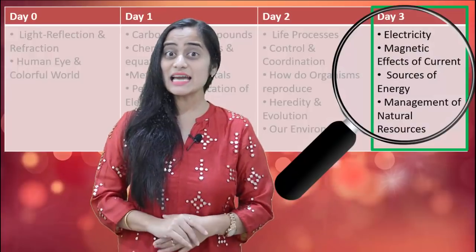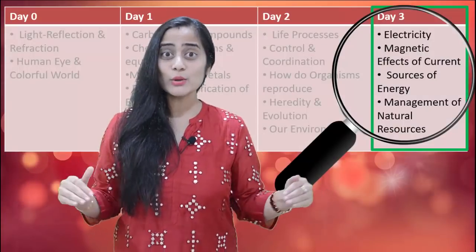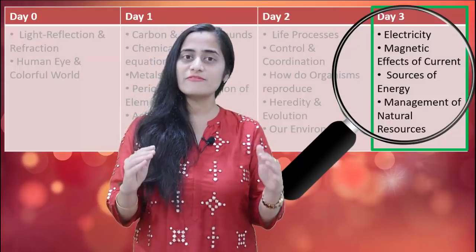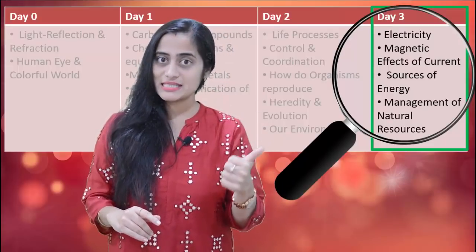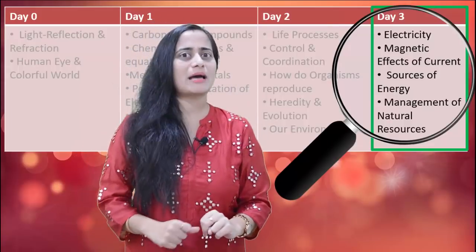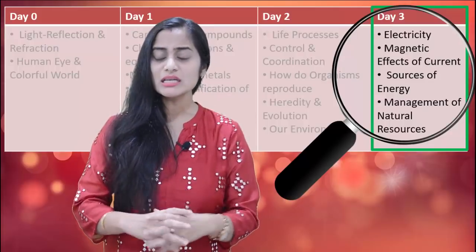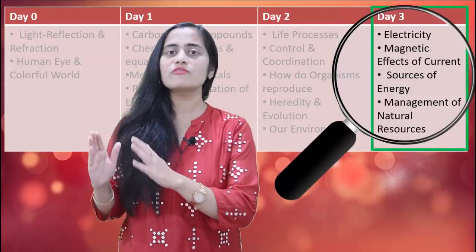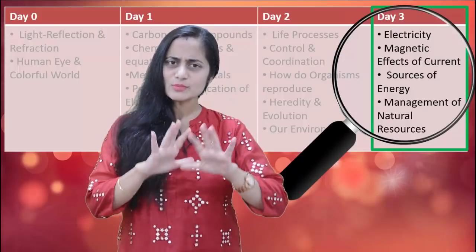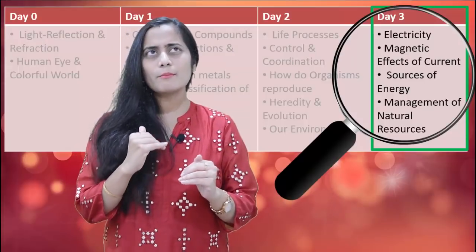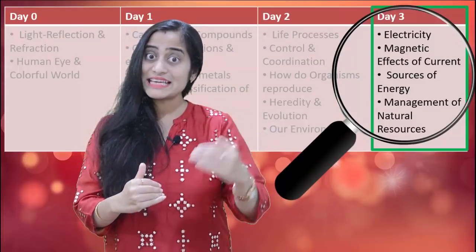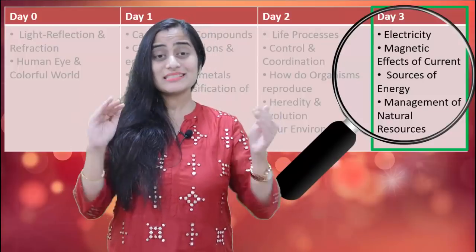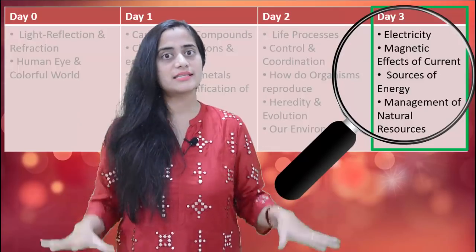Finally we are at day 3. Biology is done, chemistry is done, and physics is partly done. Today we will complete the remaining chapters of physics — electricity and magnetism. Besides that, we still have two more chapters which are not very important but we can't ignore them: management of natural resources and sources of energy. My expectation is that all four lessons on day 3 will be done by around three or four o'clock in the afternoon. By that point you will have revised the entire syllabus of class 10th science.